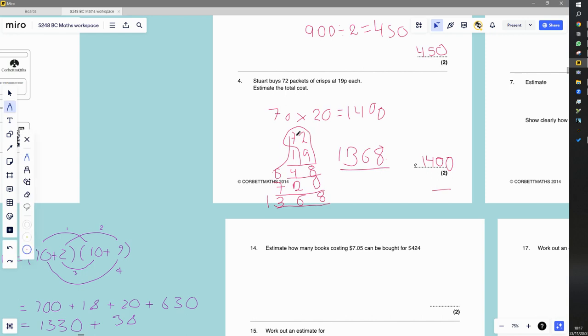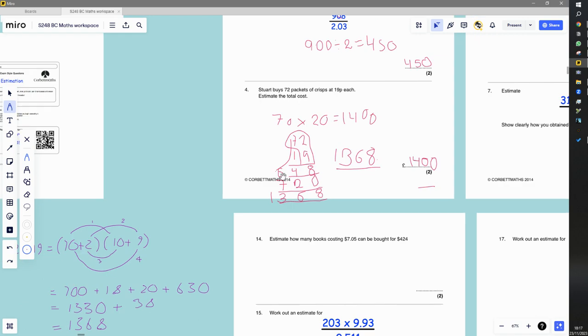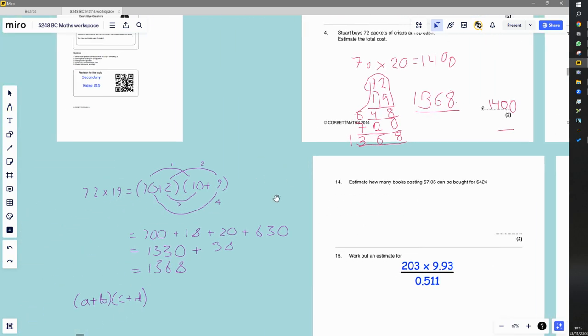Then we actually try to work it out accurately if that was what it was asking us to do. Then this is the long multiplication way of doing it. To be honest with you, I'm a bit rusty with long multiplication because I don't do that anymore. I use this method.